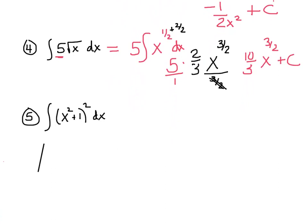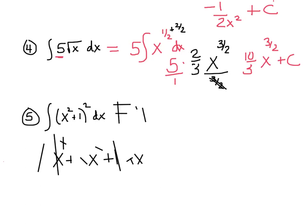So I'm going to rewrite this as the integral — squared just means write it down twice and FOIL. So x squared times x squared is x to the 4th, plus 2x squared plus 1. Let's put a big note in our book: there is no product rule, no chain rule for integrals. Now we have a nice simple integral.